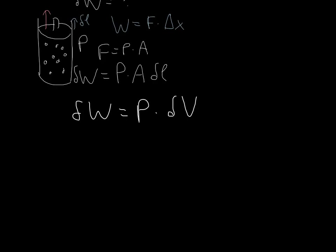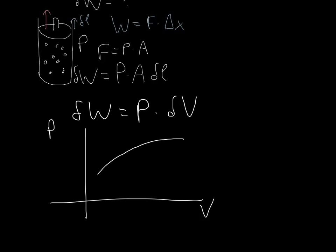If we draw a pressure-volume diagram, the little amount of work that the gas did is the pressure times the increase in volume — really the area of a thin strip. As the pressure increases or decreases, I add up this work, then this work, and then this work. So basically, if I want to calculate the total work that a gas does when it expands, all I need to do is find the area under the curve of the PV diagram, where the base is the increase in volume and the height depends on how the pressure is changing.